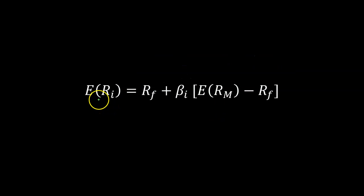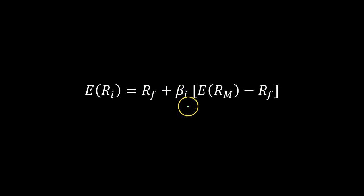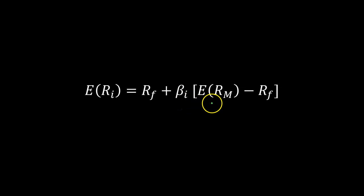Recall that the Capital Asset Pricing Model simply says that the expected return on any security or portfolio of securities can be expressed as the sum of two things. First, the risk-free rate, which is the rate of return that an investor can earn without bearing any risk. And secondly, some extra compensation for bearing the risk of investing in that security. That portion is calculated as the product of the beta of that security times the expected market risk premium.